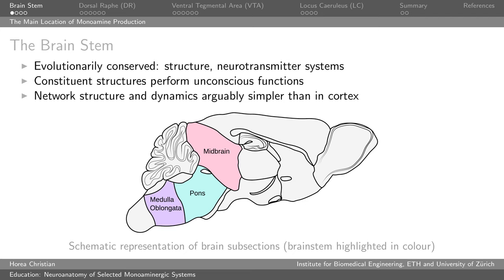This is quite interesting simply because the non-volitional aspects of brain function are those which you can, by definition, least well control via the simple force of volition, meaning that they are those functions which you would most like to control via other means, be it pharmacology or something else.